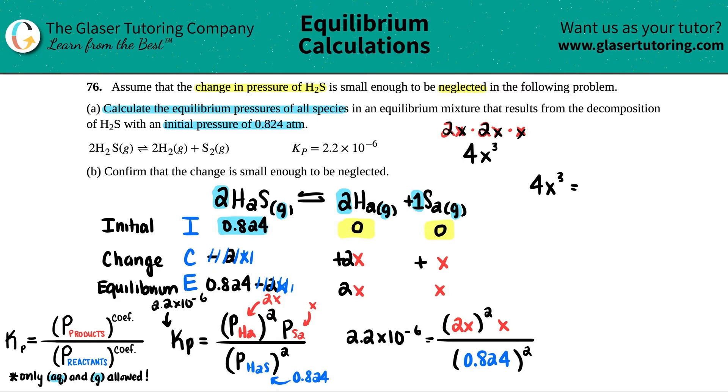So I have 4X to the third equals, let's see, 0.824 squared times 2.2 times 10 to the negative 6th. Try not to round here. So 1.49, I mean, a lot of numbers, 3, 7, 4, 7, 2 times 10 to the negative 6th.